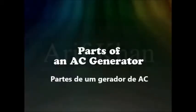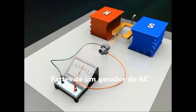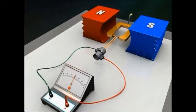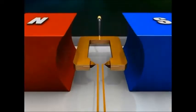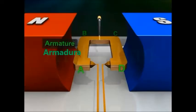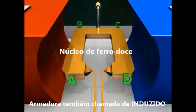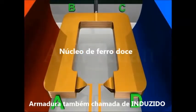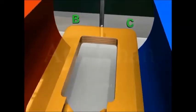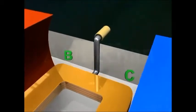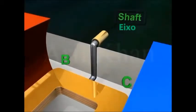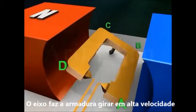An AC generator has an armature ABCD, which is a rectangular coil with many turns wound around a soft iron core. It also has a shaft that can be rotated rapidly.